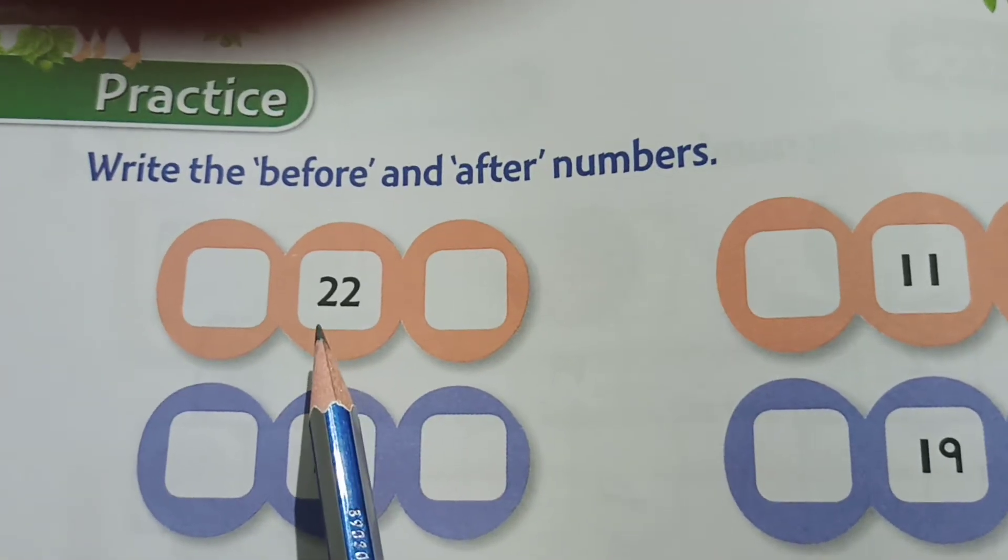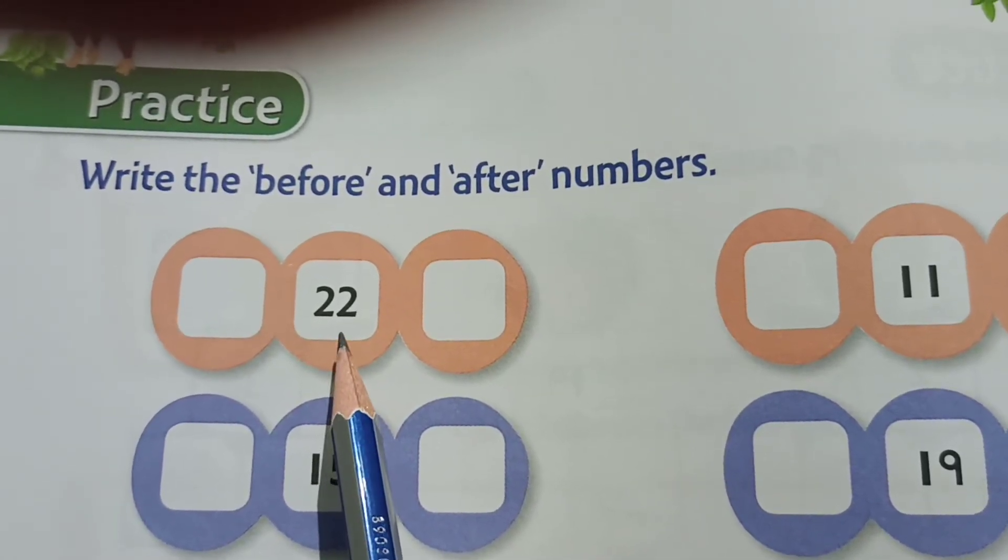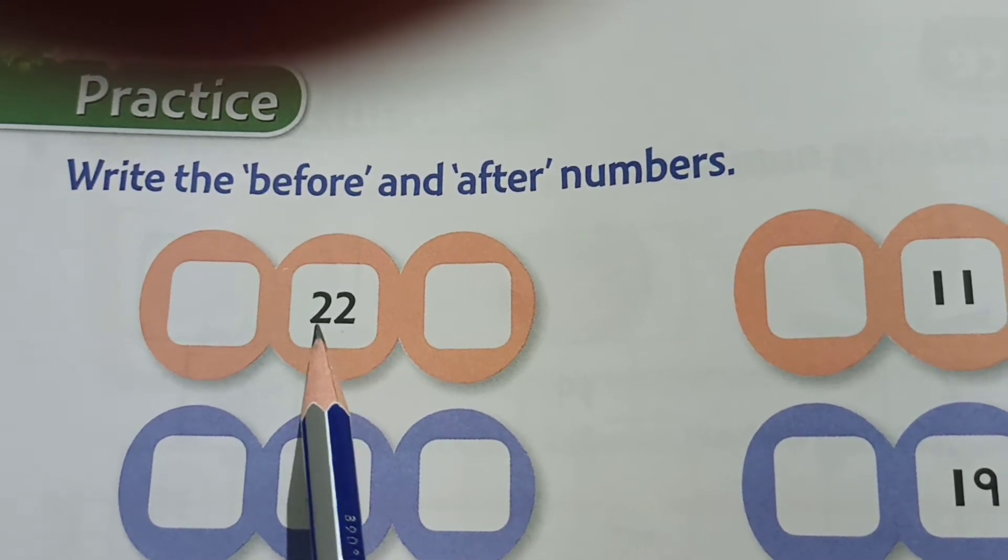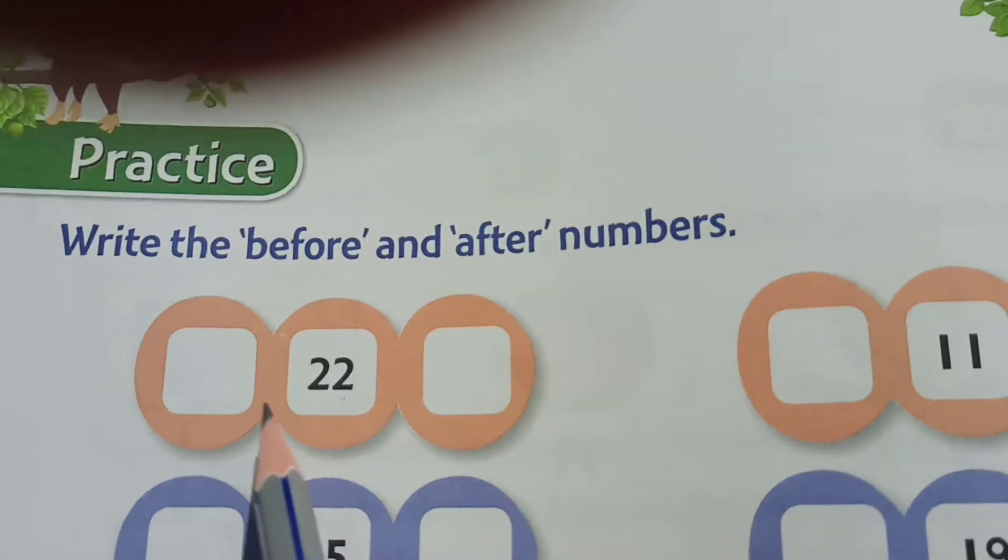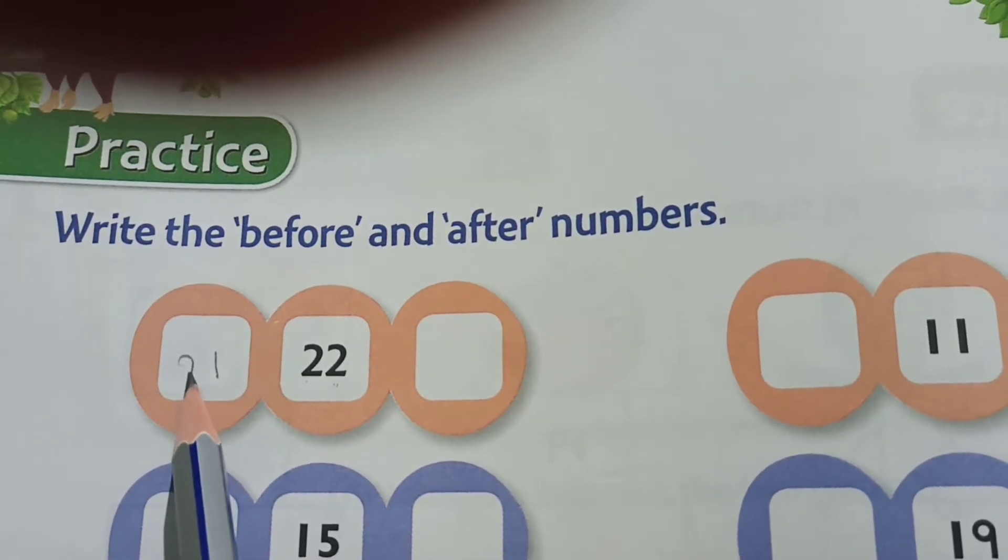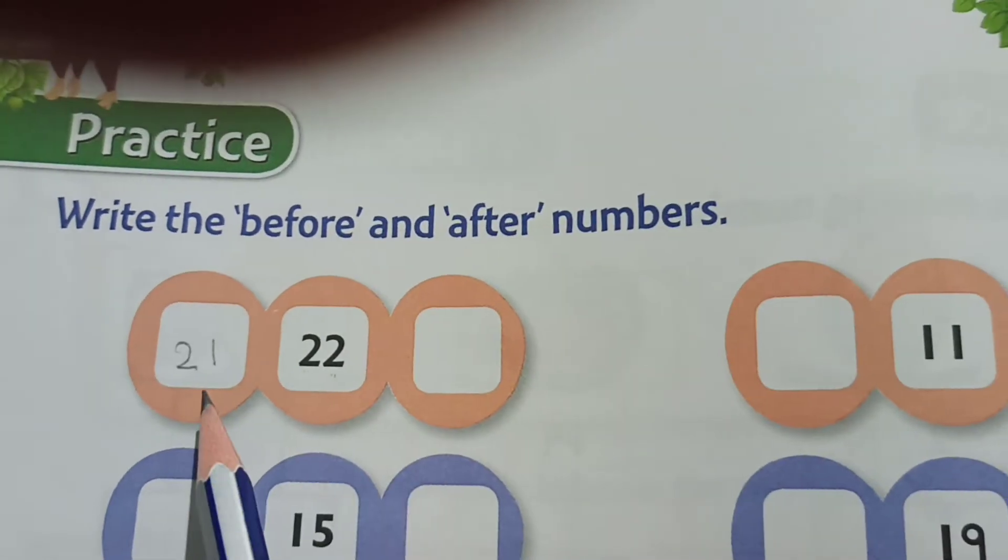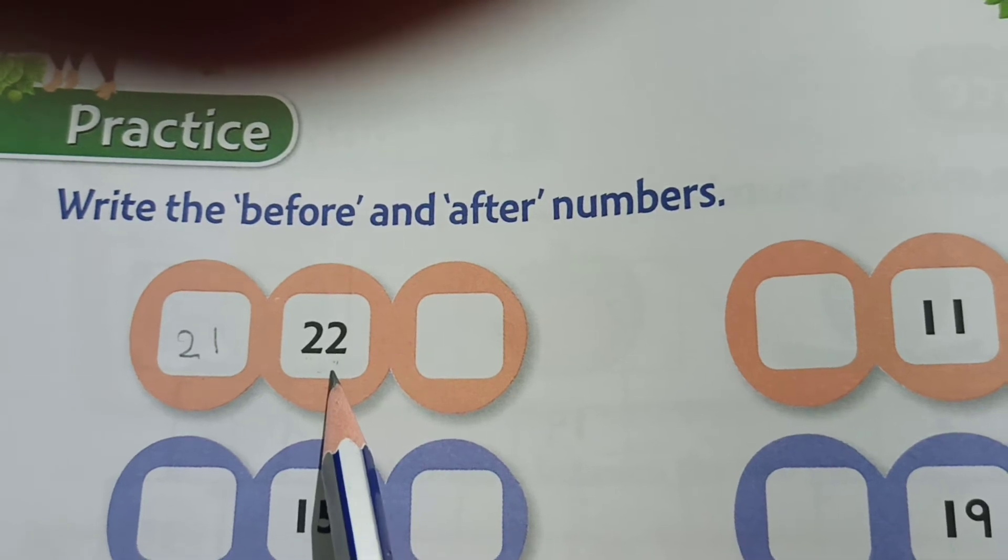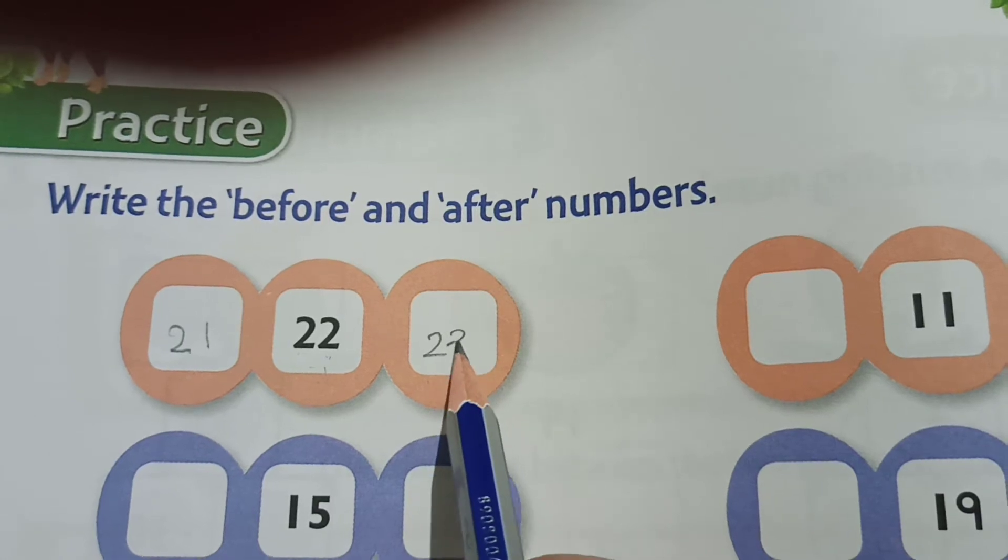Page number fifty. So here again there are mixed numbers. Write the before and after numbers. Here, what is the number given? Twenty-two. So here you can see two and here two. So before two, what comes, children? Before two comes one. And this two will write here, so this is twenty-one. So before twenty-two comes twenty-one.